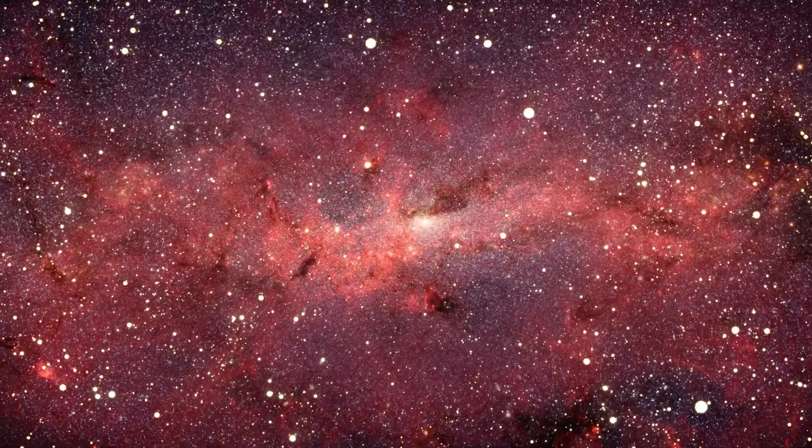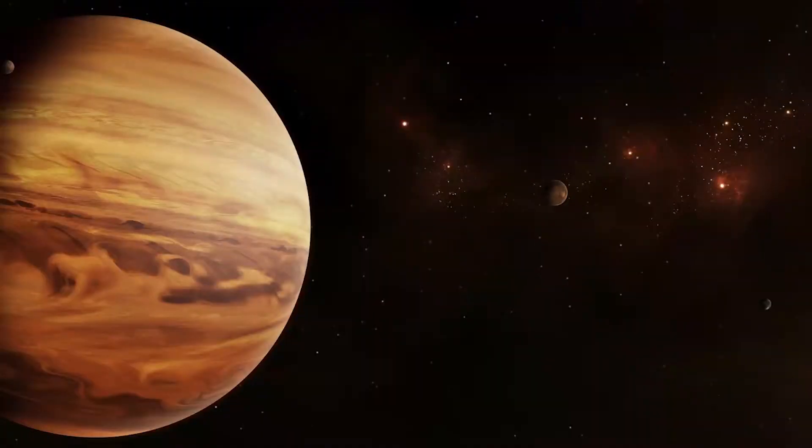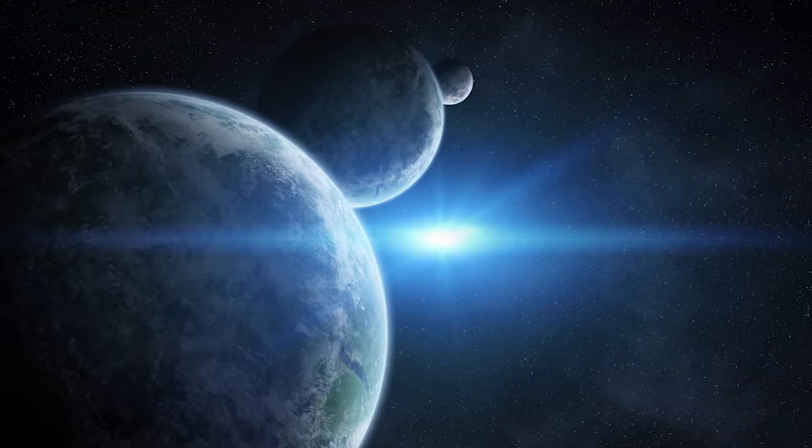Planet 9 could have accreted more mass from the protoplanetary disk and developed into the core of a gas giant. Instead, its growth was halted early, leaving it with a lower mass than Uranus or Neptune.